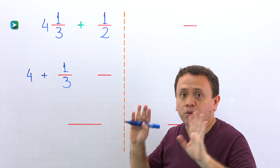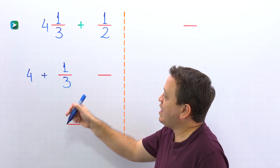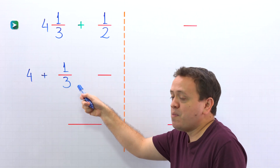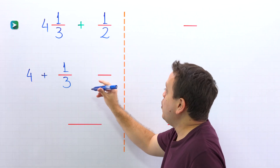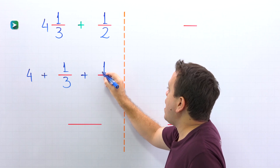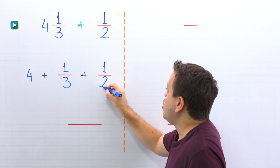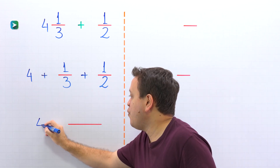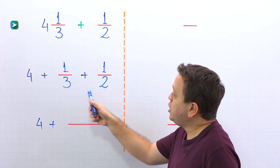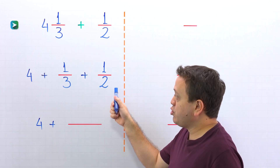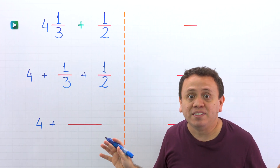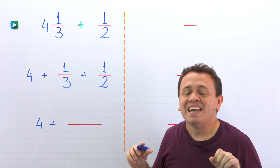Over here, we just rewrote the mixed number 4 and 1 third as the sum of a whole number and a proper fraction. Now we put the plus sign and then we have 1 half. So we have 4 plus 1 third, and next we need to add these two fractions with unlike denominators.